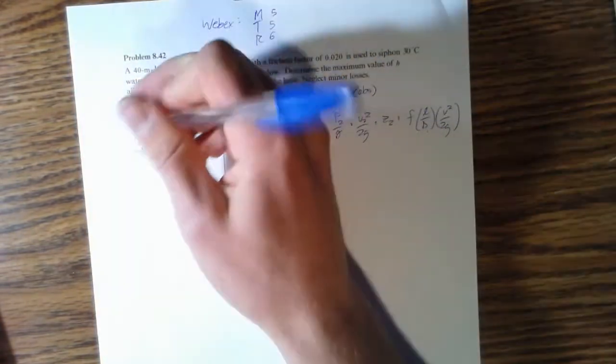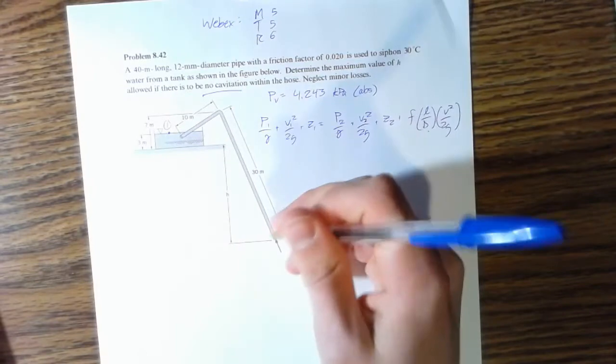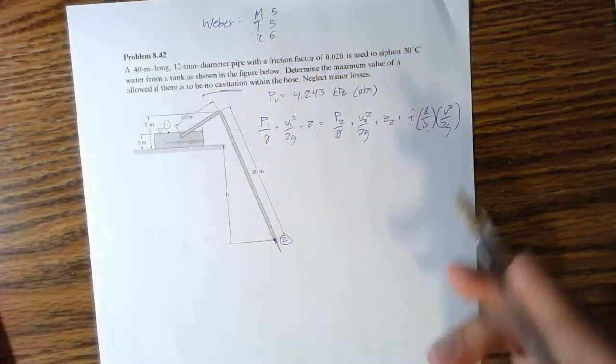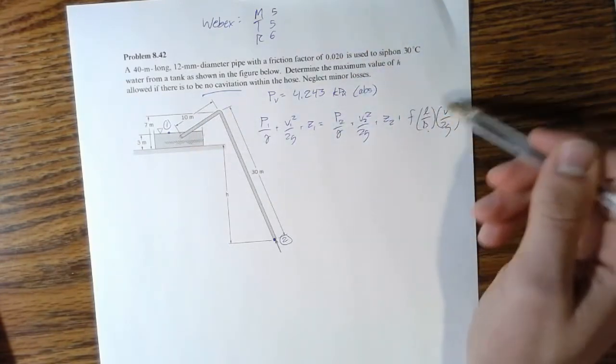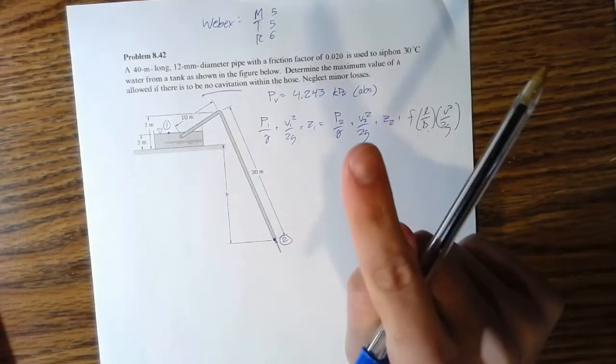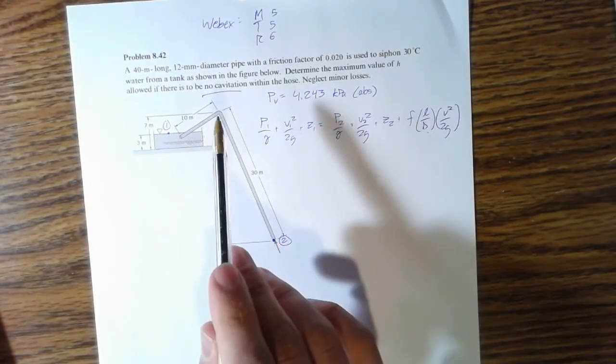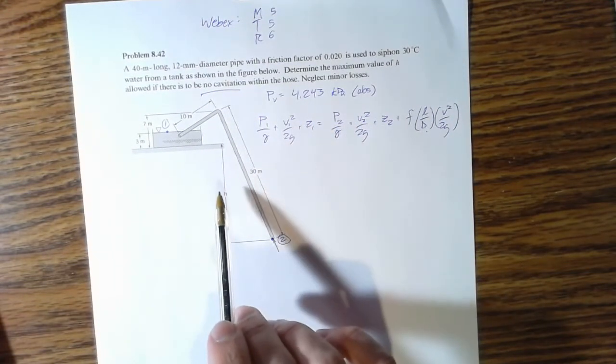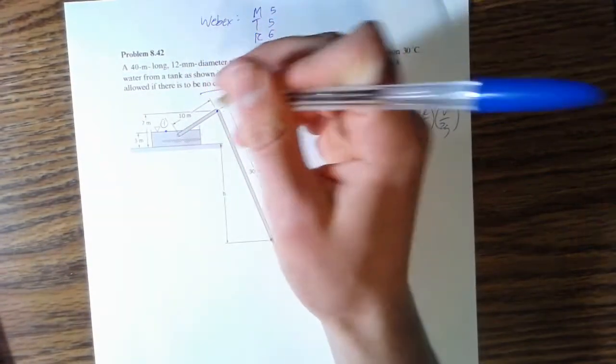With any Bernoulli equation problem, we're going to have to pick points. We're going to pick a point here in the tank and here at the end of the pipe because that's where a free jet is going to be. We need another point within the pipe - the point of minimum pressure is going to be right here in the bend of the hose at the highest point. Call that point 3.